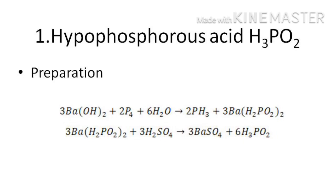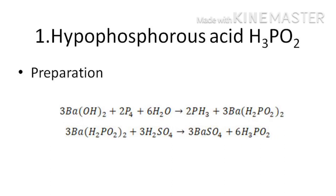The first oxoacid of phosphorus is hypophosphorus acid. This acid is prepared by heating white phosphorus with alkalis like barium hydroxide, when barium hypophosphate is formed. This is separated and treated with a calculated quantity of sulfuric acid to recover hypophosphorus acid. The barium sulfate formed is separated by filtration.